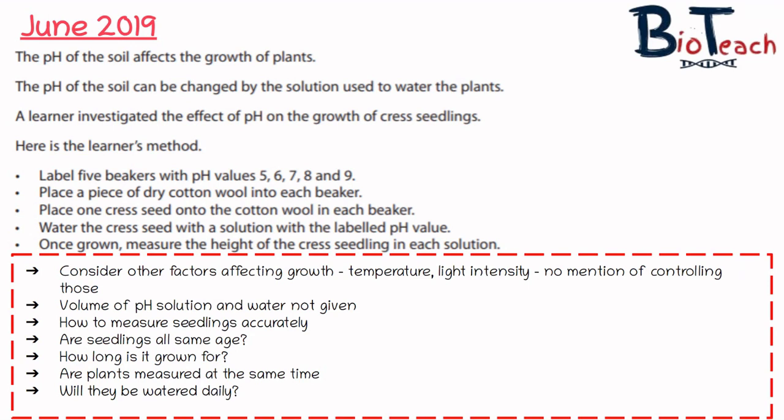We also don't know how long the seedlings are grown for — two days, a week, a month? Are they measured at the same time? Are they watered daily? How accurately are the seedlings measured — with a ruler or another device? Are all seeds the same age, since the condition and age of the seedlings may affect growth? There are quite a lot of errors in this method, and you should be able to identify at least three or four of these.